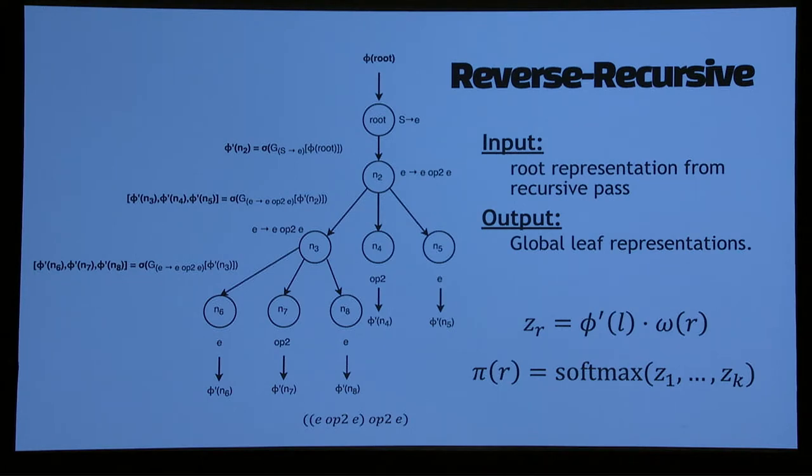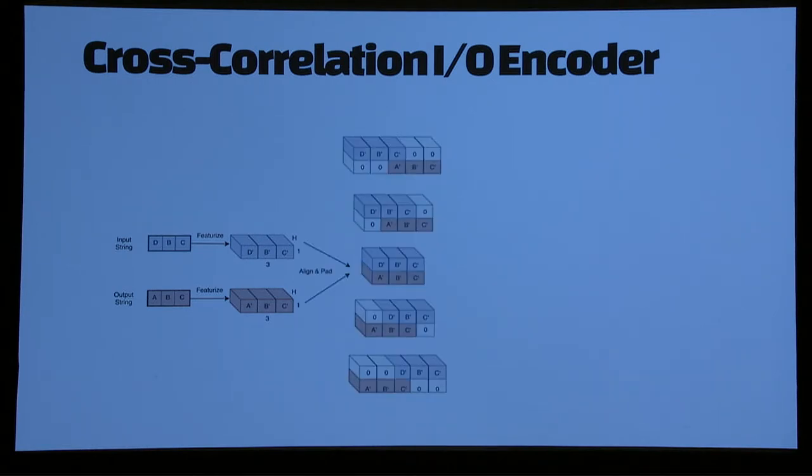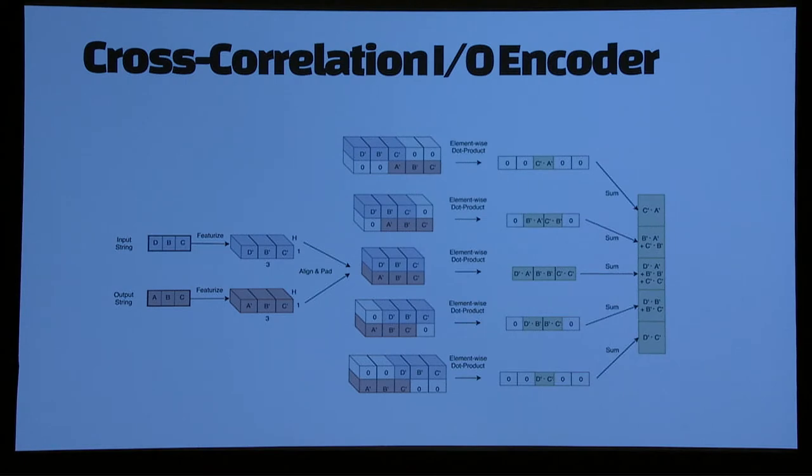Now we want to condition this model with the examples that users have provided. Again, there are many choices. The one for this paper we were using was something called cross correlation, where we have input-output strings. We run LSTMs over them to get last hidden state. Then we do this kind of cross alignment. We try all possible alignments and then do some kind of pooling to get a fixed length representation of the examples. The intuition about doing this alignment was that since Flash Fill requires some notion of substring, if we do this alignment, we can understand which parts of input strings are common in the output strings.